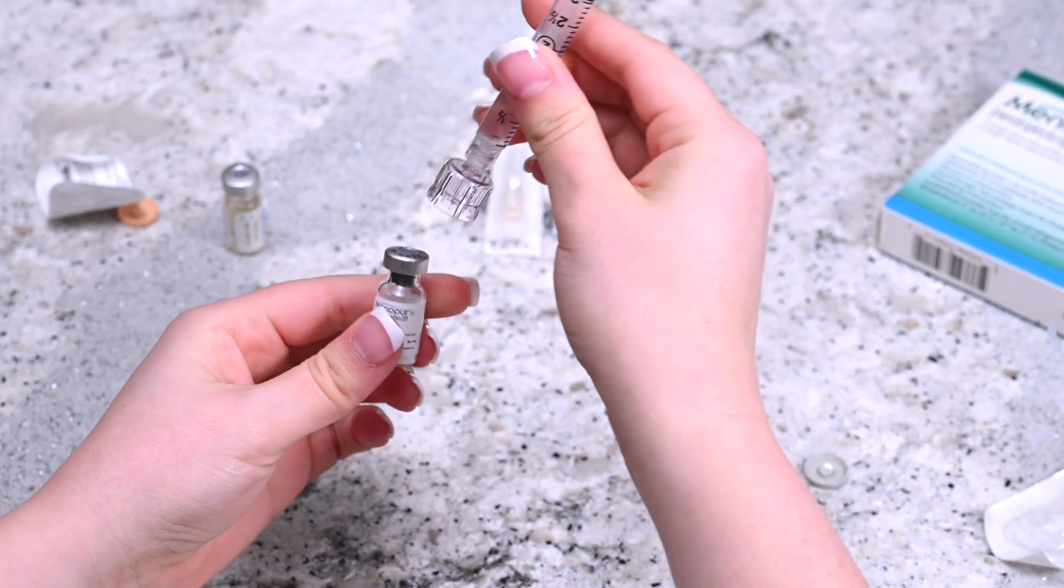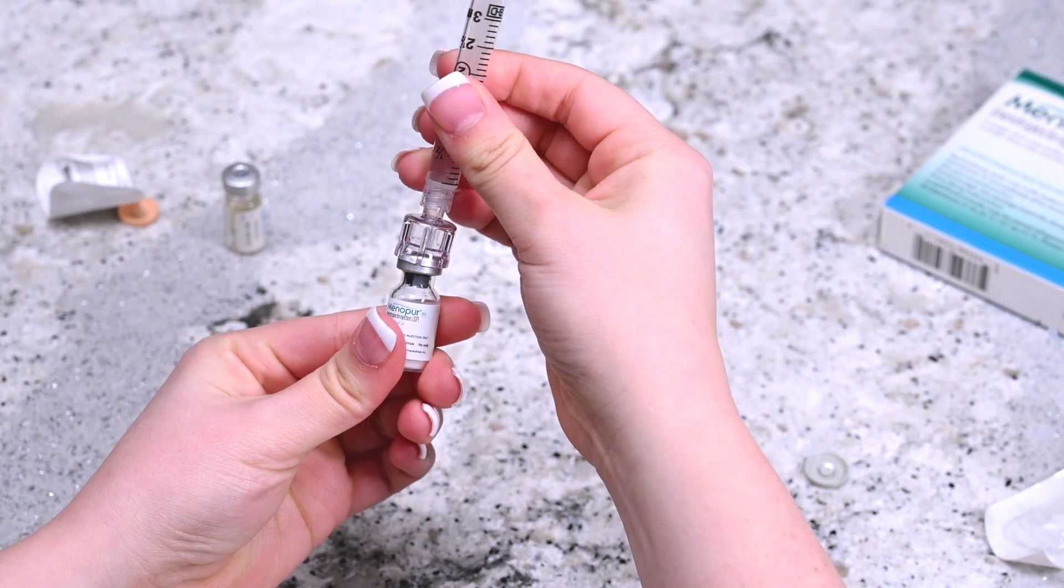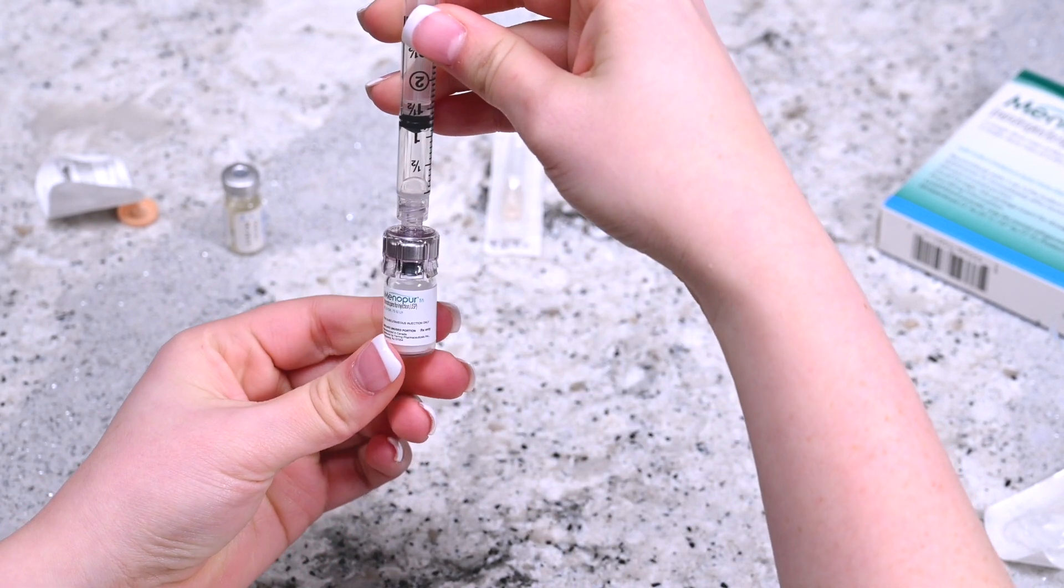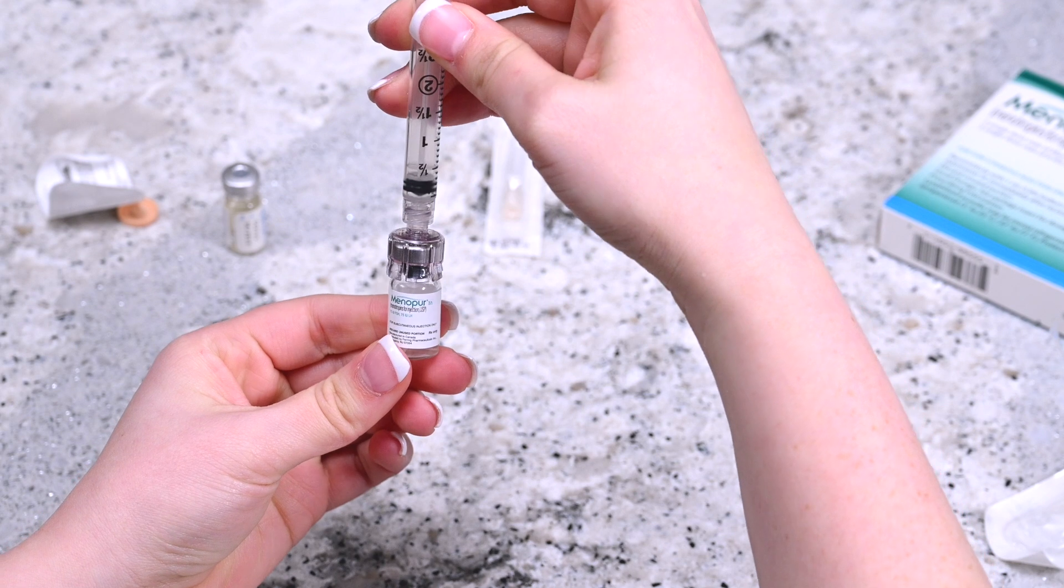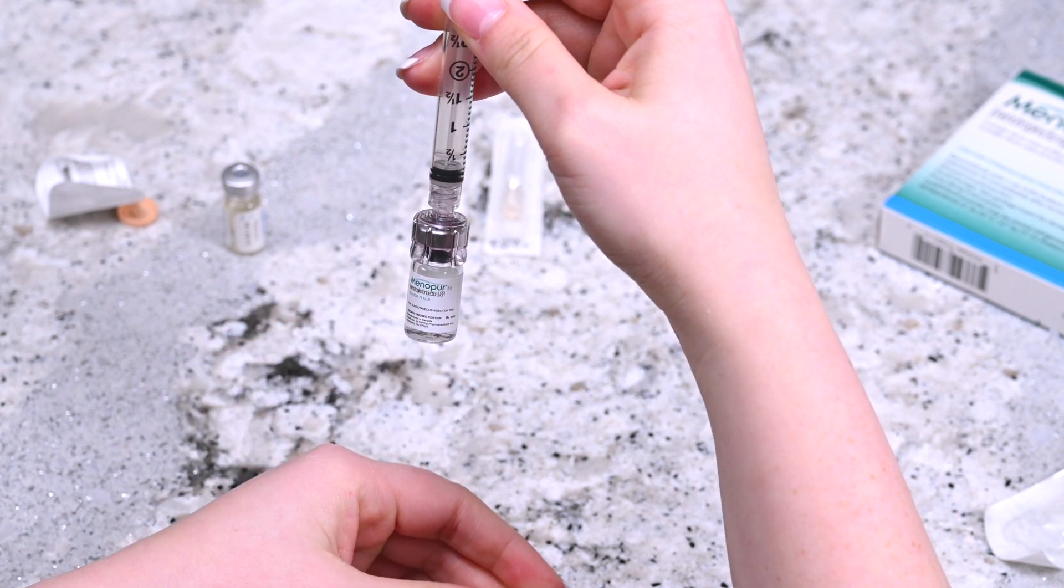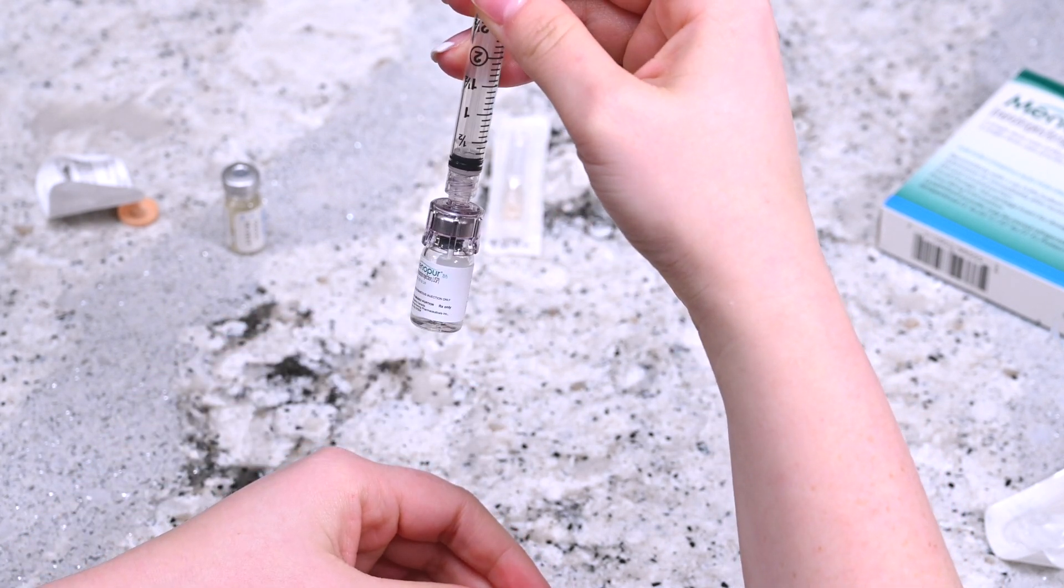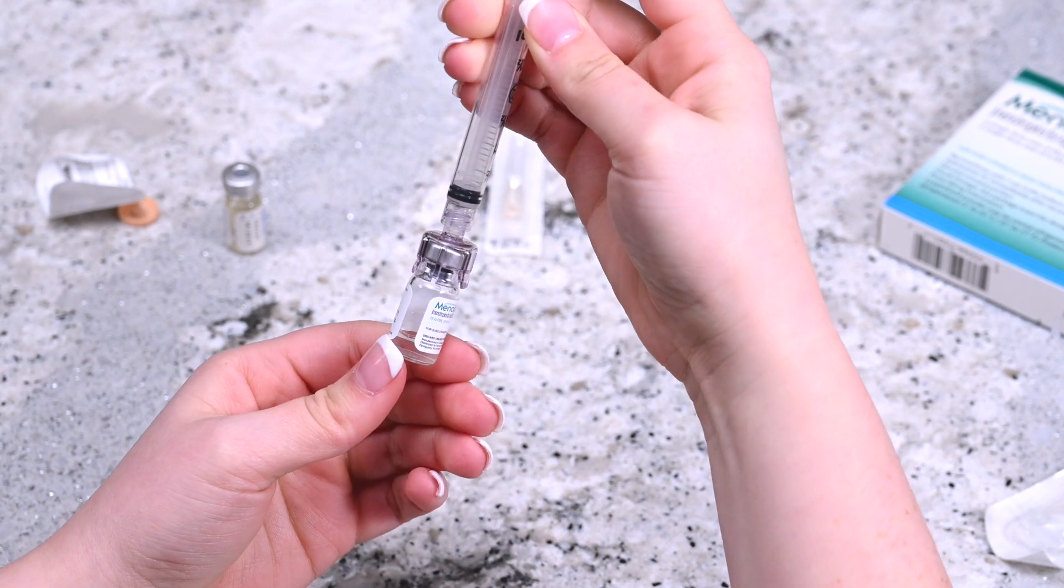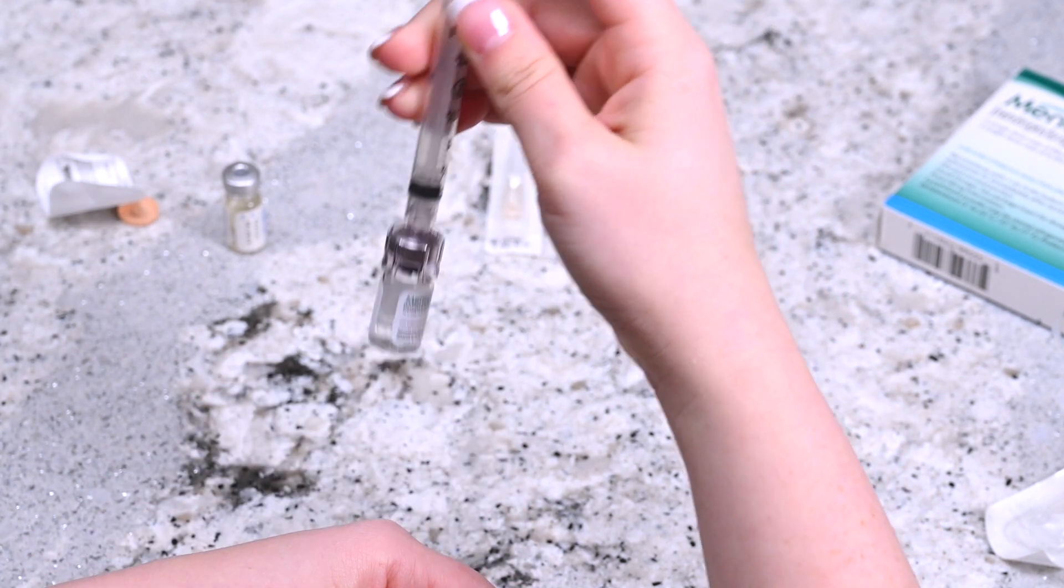Insert the q-cap into the rubber stopper on the vial of Menopur powder and release the syringe's content into it by pressing on the plunger. After releasing all the liquid into the vial of Menopur powder, gently mix the contents until the powder dissolves. Do not shake the vial.